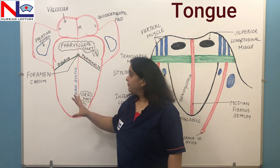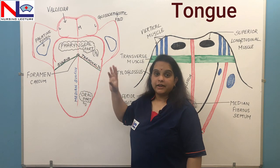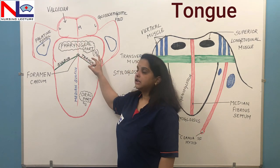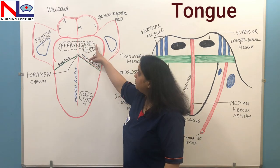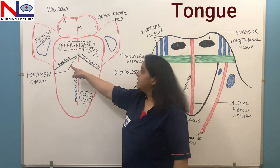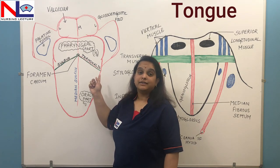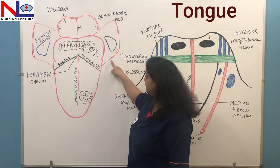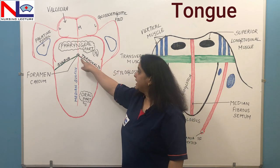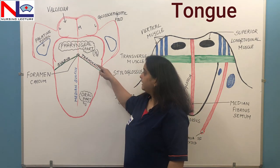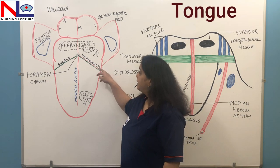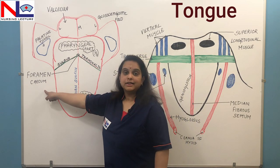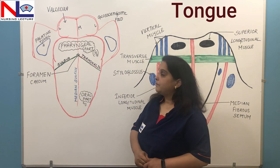The dorsum of the tongue is divided into two parts: the anterior two-thirds is called the oral part, and the posterior one-third is called the pharyngeal part. Both parts are divided by a V-shaped groove called the sulcus terminalis, which goes laterally and forward up to the palatoglossal arc, dividing the oral and pharyngeal parts. At the apex of this sulcus terminalis, there is one depressed area called the foramen cecum.